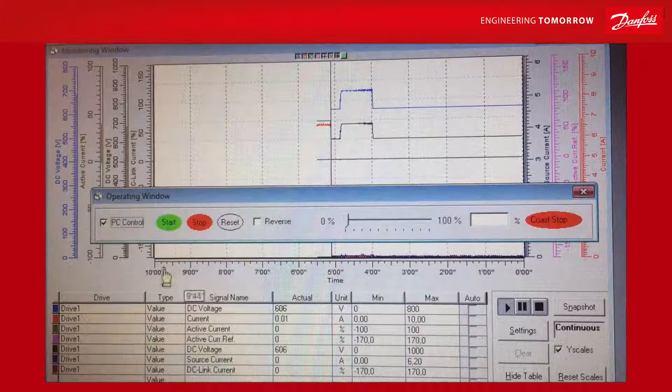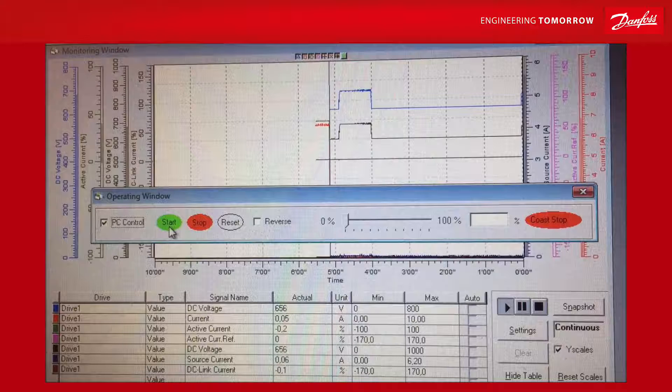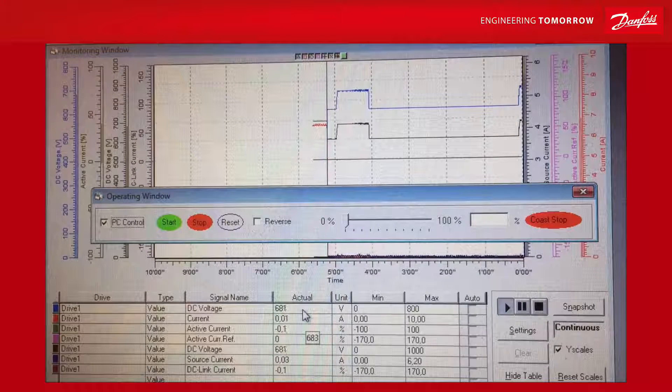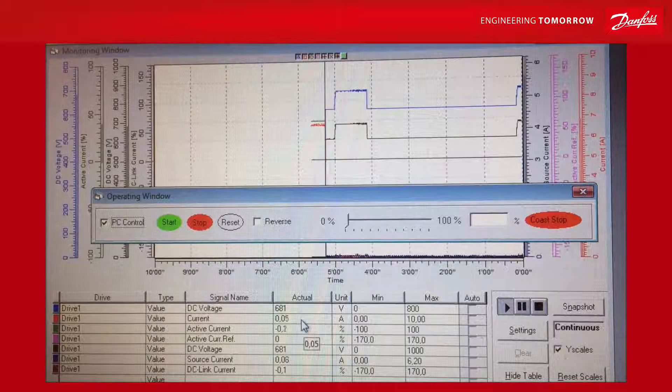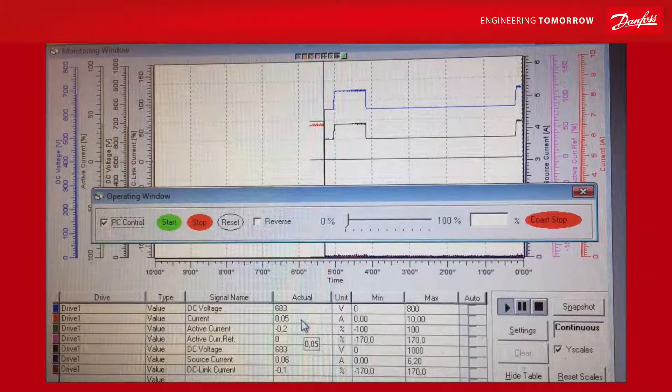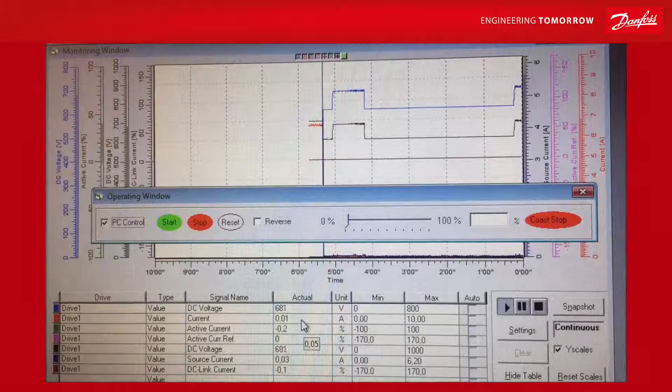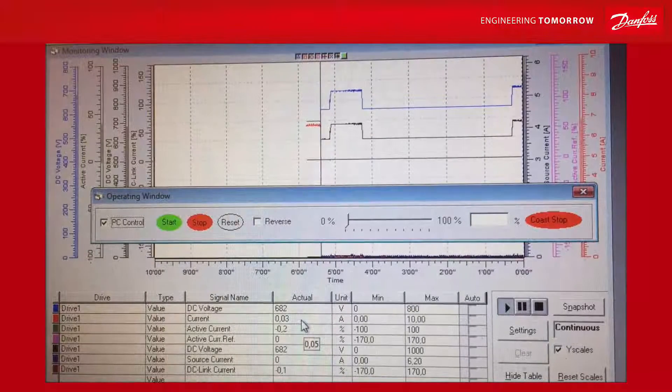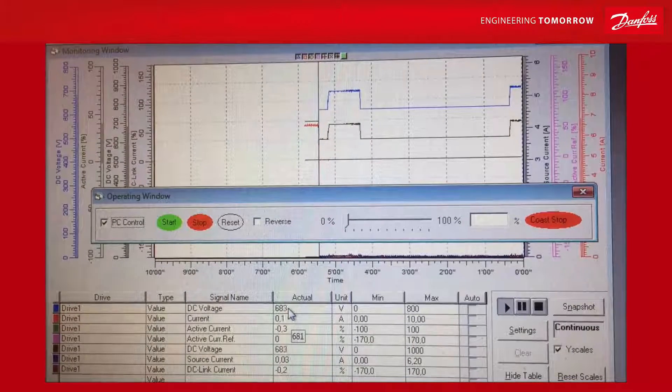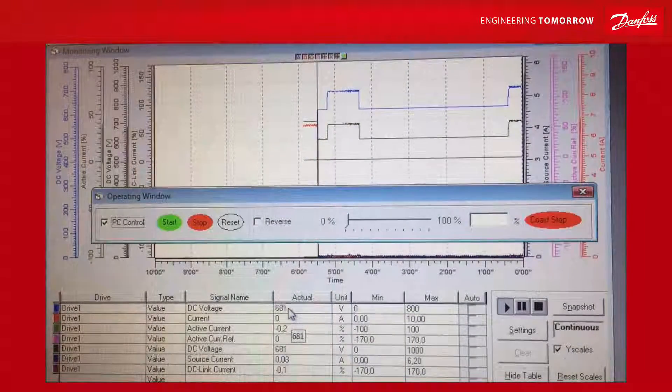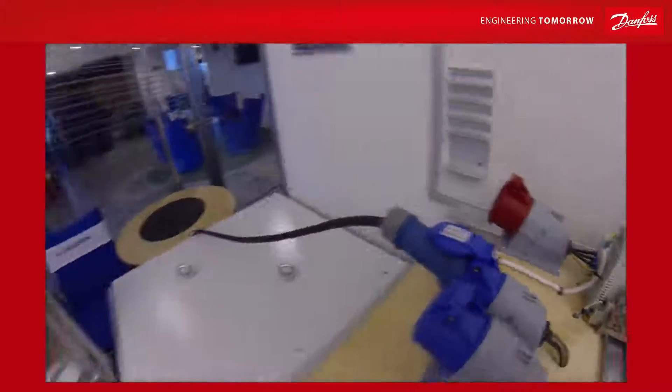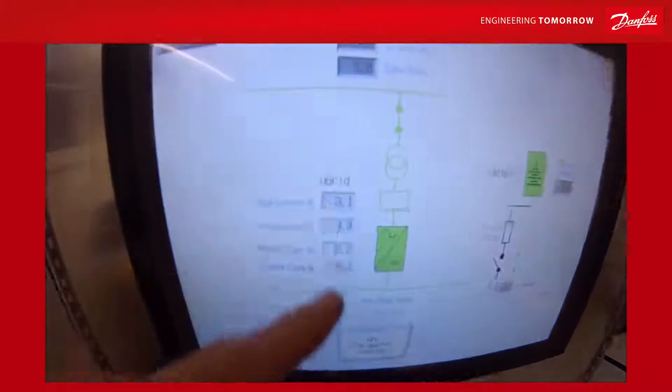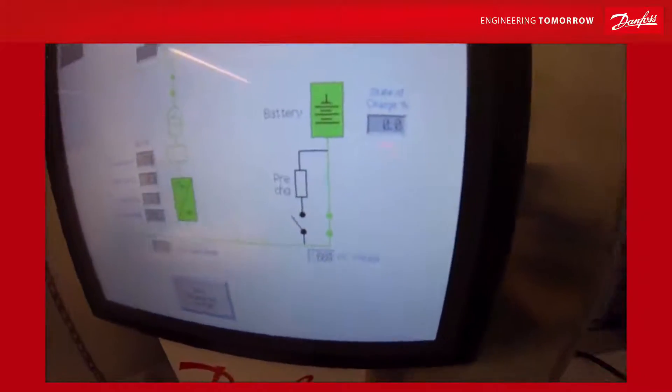Let's start the drive. It went to 682 volts. The current is almost nothing. And also that is because we are not connected to a common DC bus system. So this is in free air. But we see that we have control of the common DC bus voltage.